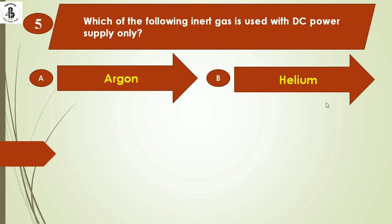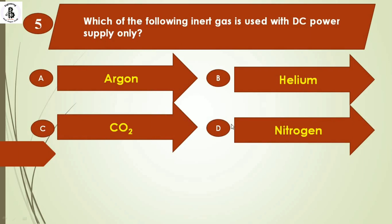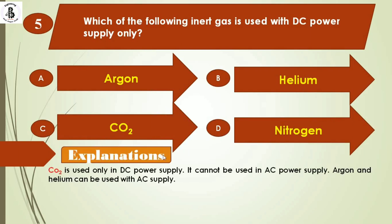Next question: which of the following inert gases is used with DC power supply only? Option A: argon. Option B: helium. Option C: CO2 (carbon dioxide). Option D: nitrogen. CO2 is used only with DC power supply and cannot be used with AC power supply. Argon and helium can be used with AC supply. So the right answer is option C, CO2.